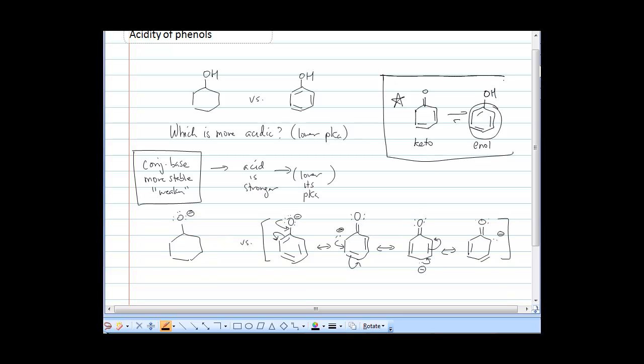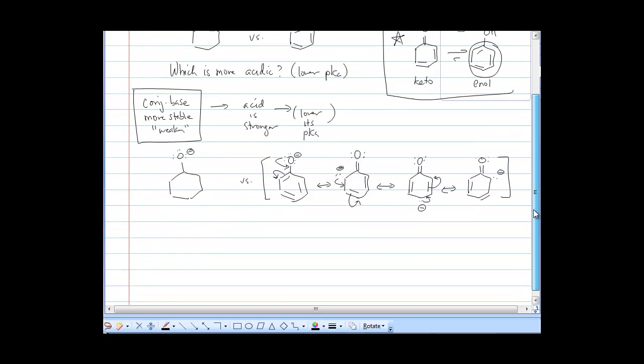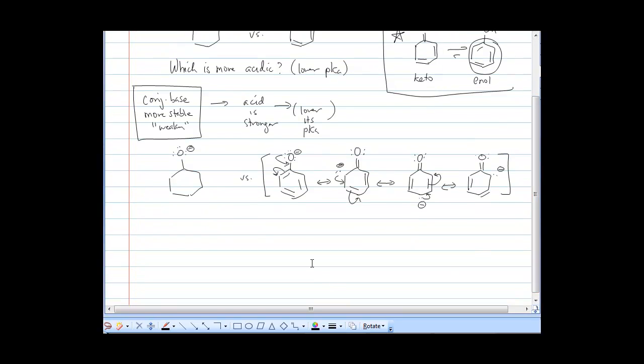What we have here with the resonance structures is we have these various resonance structures to show the delocalization of the charge throughout the ring. And so what that does is it spreads electron density. And because the negative charge electrons would repel each other, we want that charge to be spread over the molecule if possible. And so the aromatic ring allows us to do that.